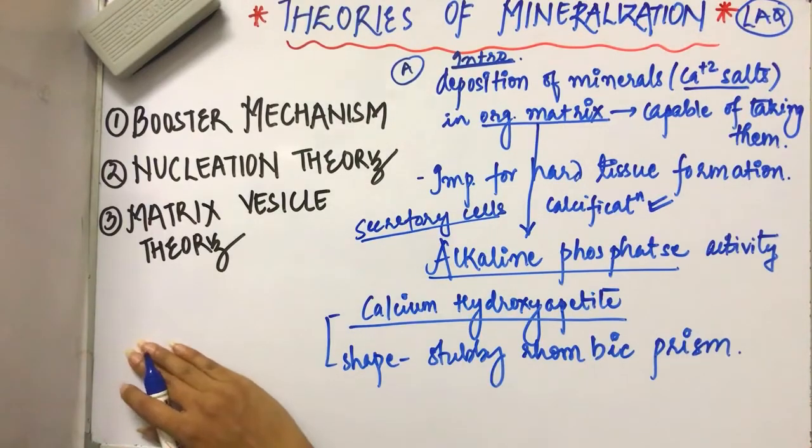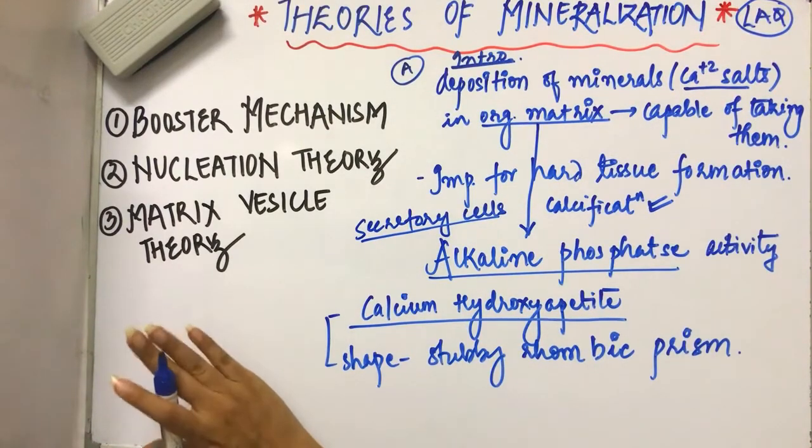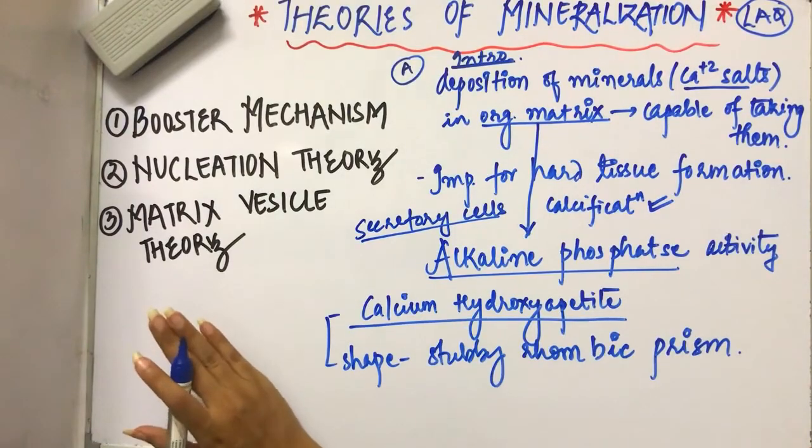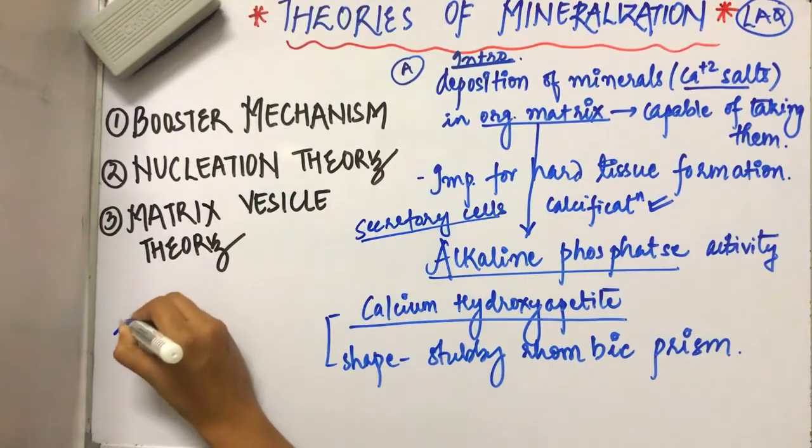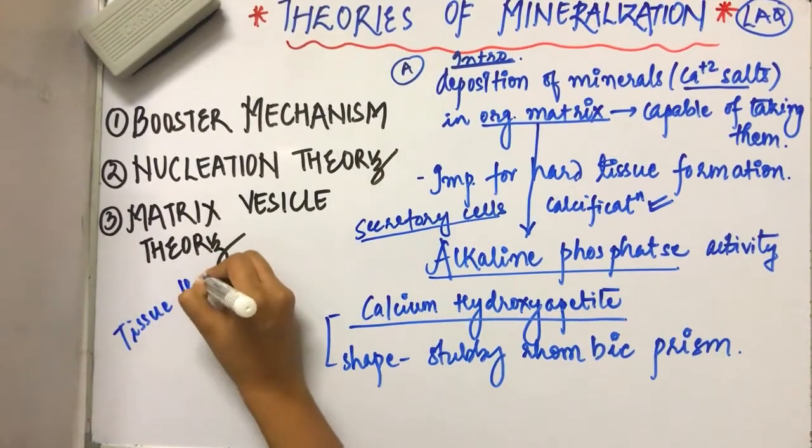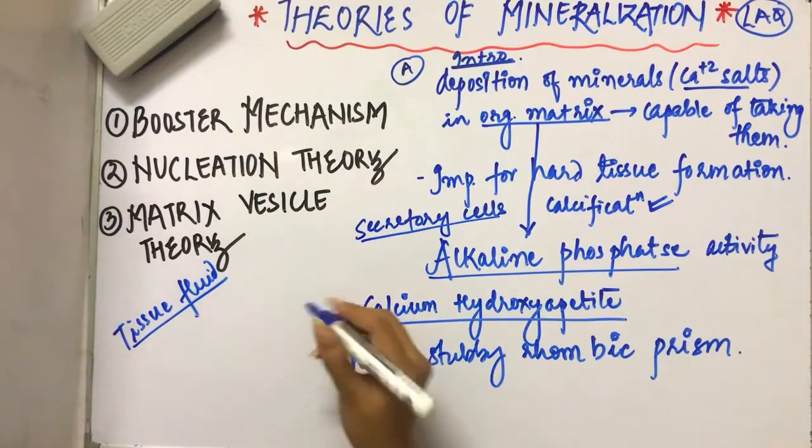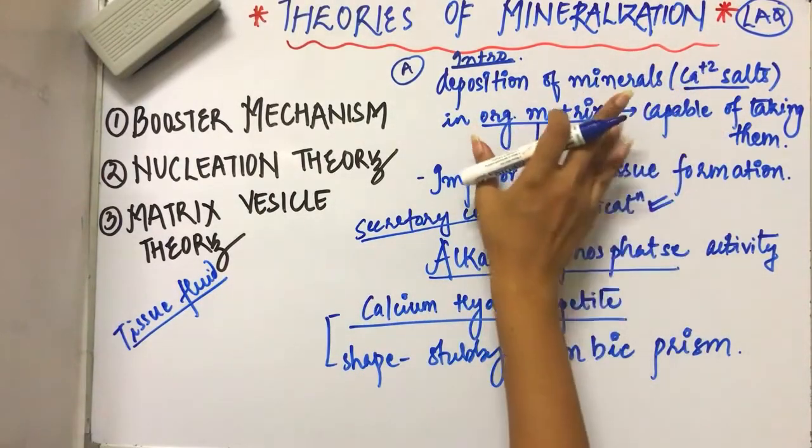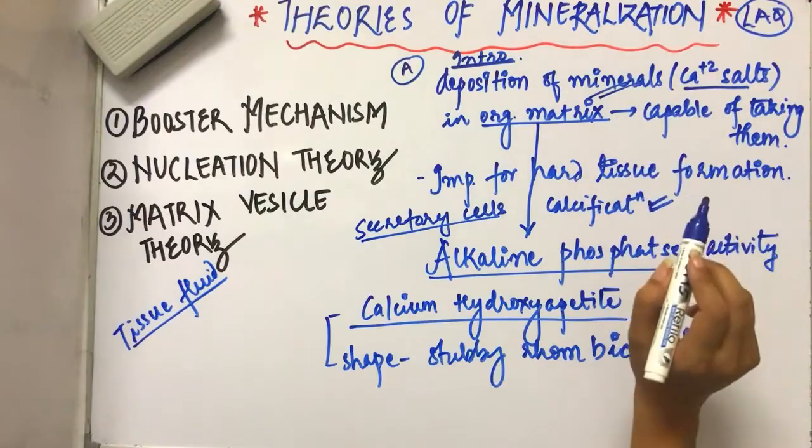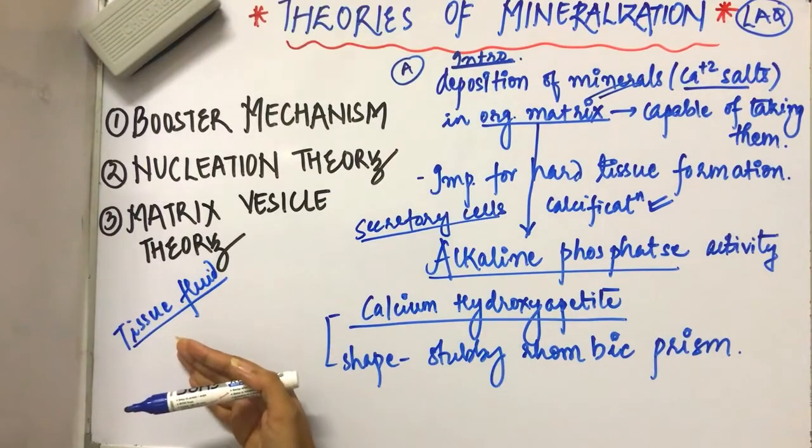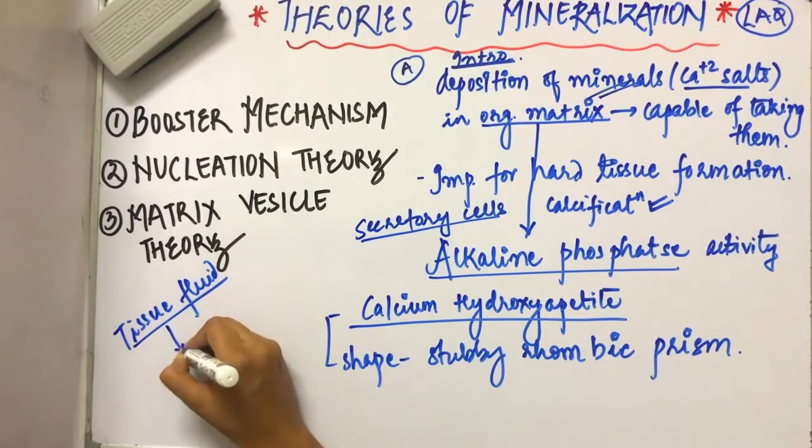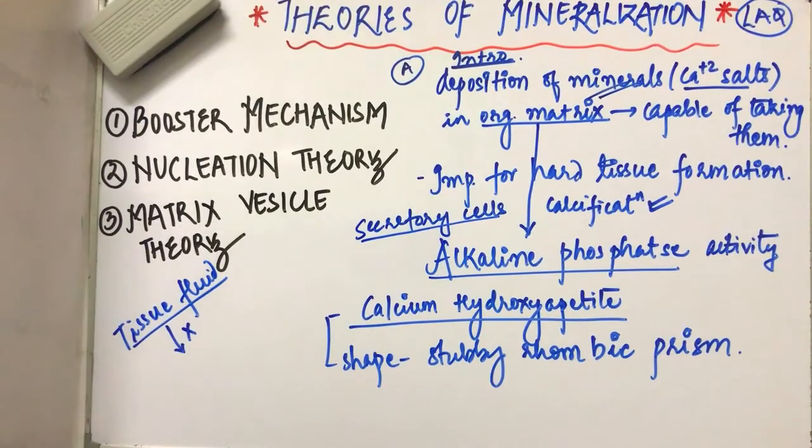Although our body tissue fluid also has mineral content - phosphate and other minerals - but why don't we have mineralization in this tissue? So tissue fluid also has mineral content. We have said it is important for the organic matrix. Now, this mineral content may be present in tissue fluid. So the tissue fluid should also get mineralized. But why don't they get mineralized? Why is there no mineralization in the tissue fluid? What are the reasons for that?